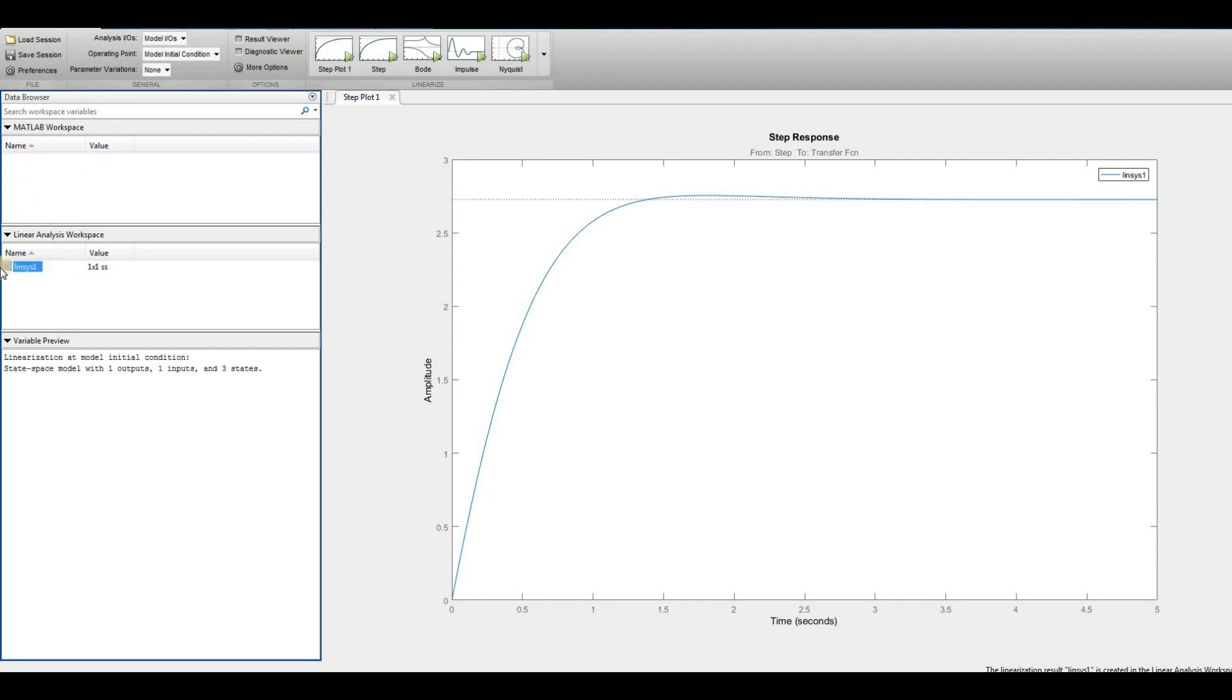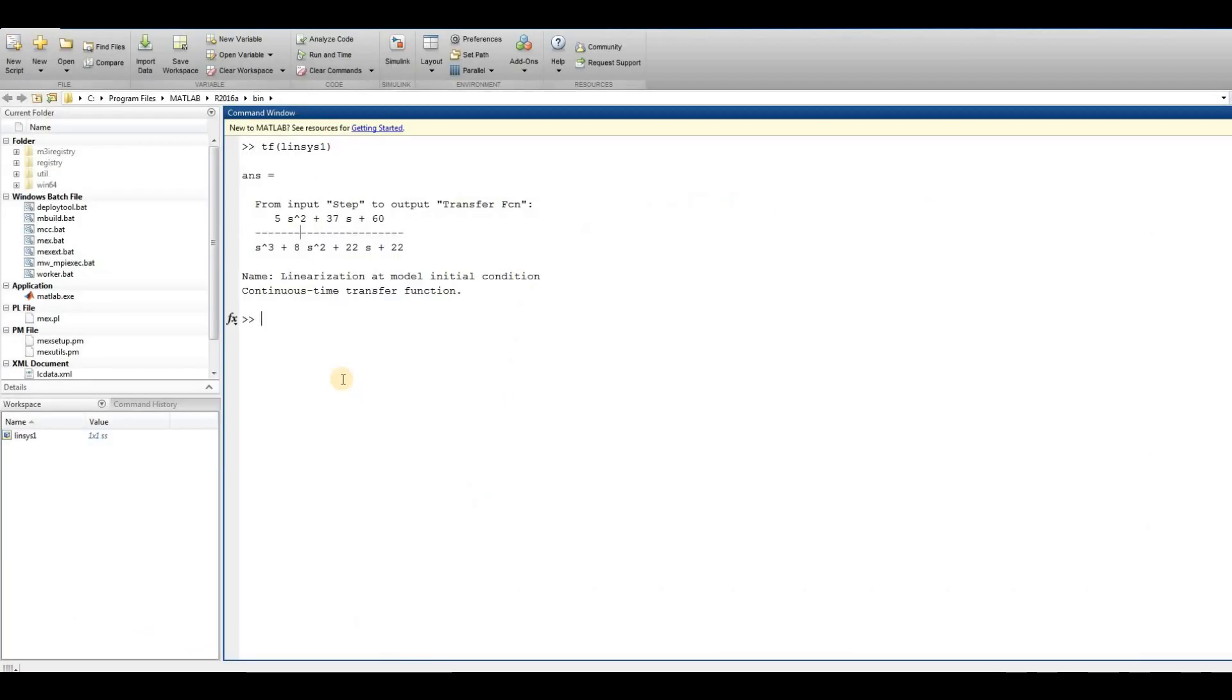Here a model is generated. Select the model and drop it to the MATLAB workspace. Then go to MATLAB and use this command to get the transfer function of the closed loop system.